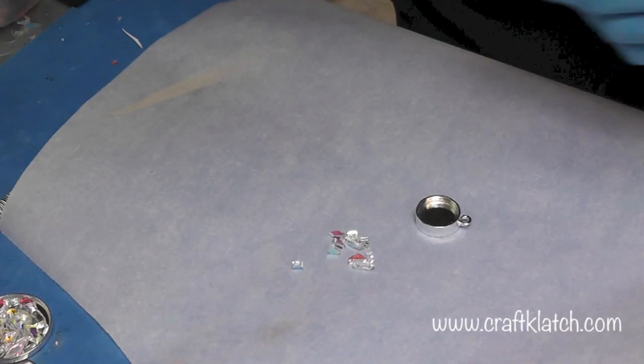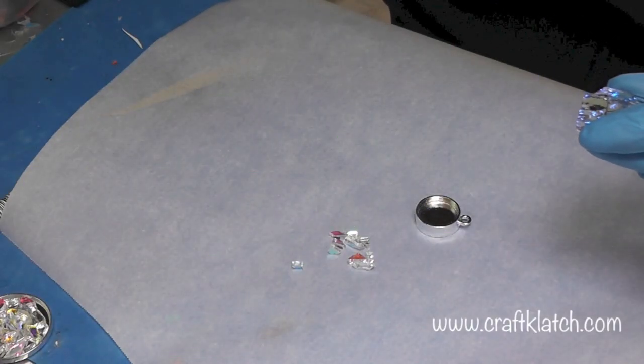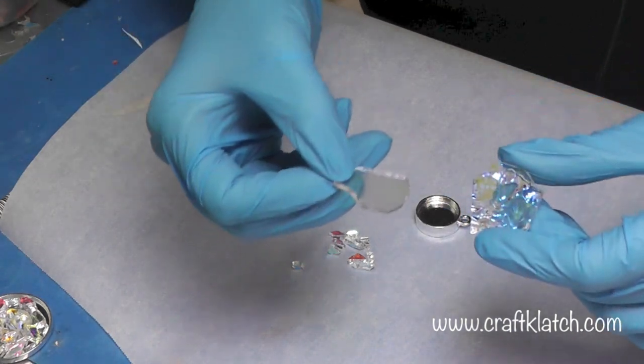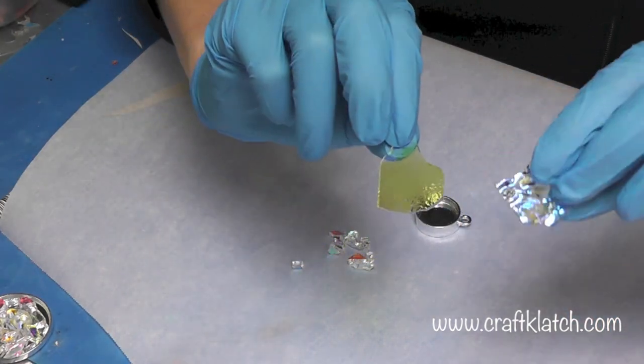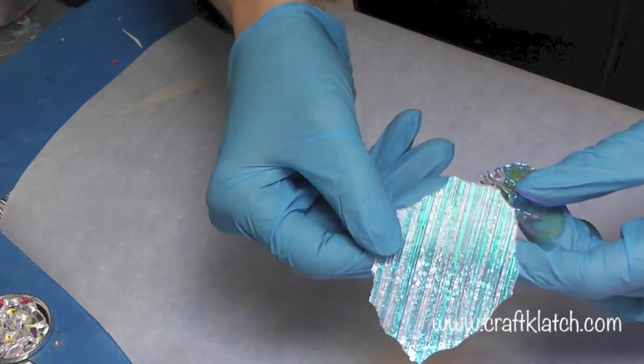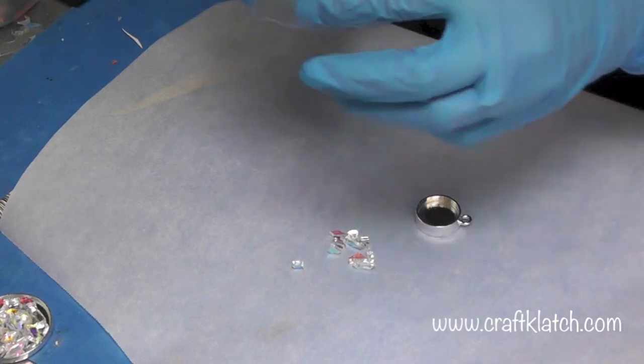If you don't know what dichroic glass is, it's just glass often used in glass fusing. It kind of changes color depending on which way you look at it, and it comes in a lot of different styles and colors.